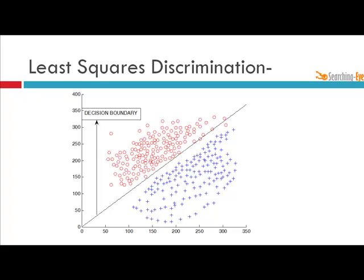So this is the decision boundary or separating hyperplane by least squared discrimination. We will consider the mathematical formulation of least squared discrimination in the upcoming slides.